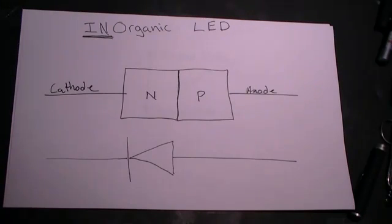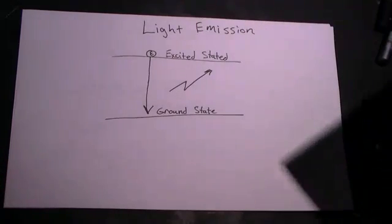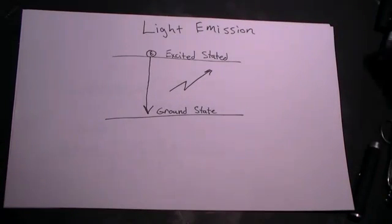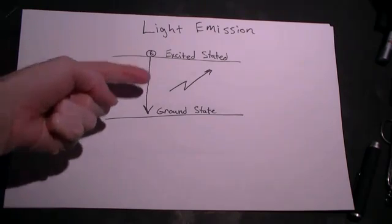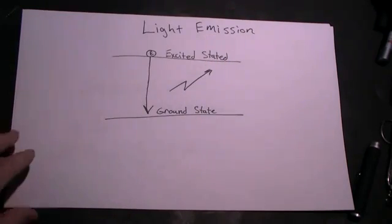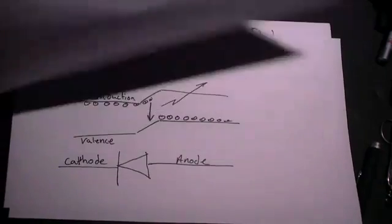But first, let's take a look at inorganic LEDs. They consist of an N and a P type semiconductor. Light is emitted when electrons drop from a high energy state to a lower energy state. This is called the band gap and is engineered into the device by the particular semiconductors and the doping used.